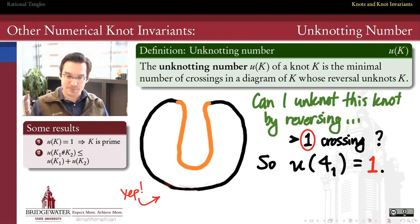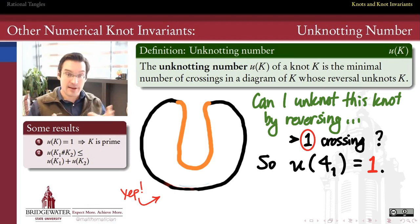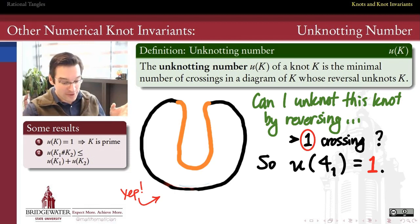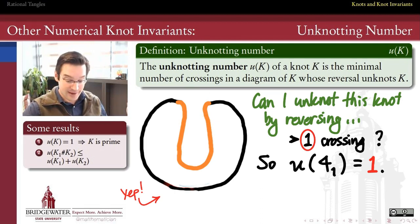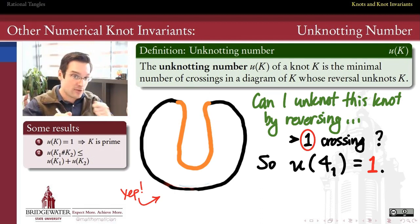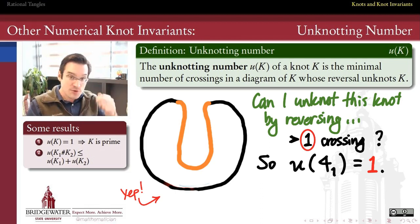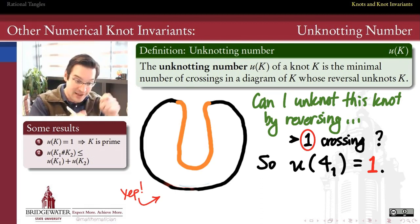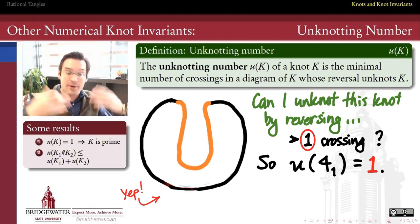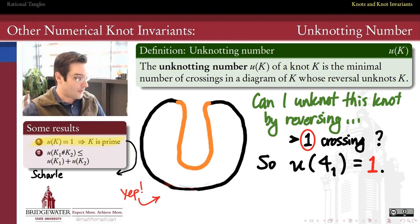So the unknotting number of the figure eight knot, four sub one, is one. We got pretty lucky here. Finding the unknotting number is a lot like 'name that tune.' If I couldn't find one crossing to unknot this knot, I would amp it up and say: what if I choose two crossings to reverse? Then could I get the unknot? I'd have four-choose-two different places to try. If no combination of two works, I'd amp it up again and ask: can I do it by reversing three? And so on.